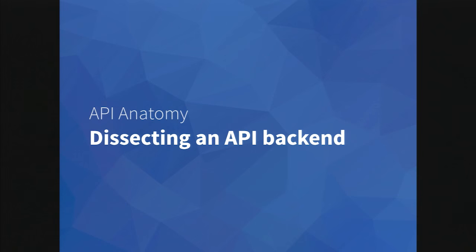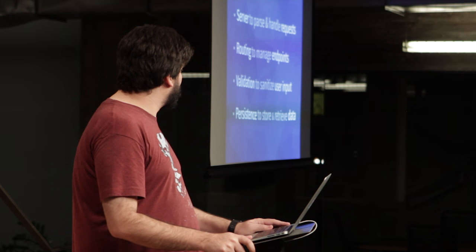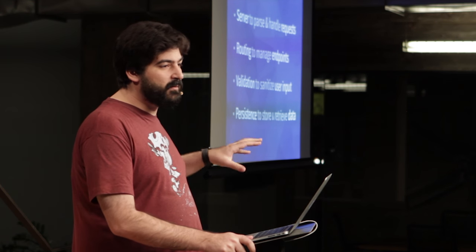I started to think about the constituent parts that make up an API. You have your server, which parses and handles the requests. Then you have routing, which is how you define your endpoints. Then you have validation — some mechanism that sanitizes the input you're receiving from users before you manipulate it or put it into a database. And then finally, you have the persistence layer, which you use to store and retrieve data. This is a simplified top-down view of what an API looks like, but if you're building a lot of API backends, you'll find these are generally the pieces.